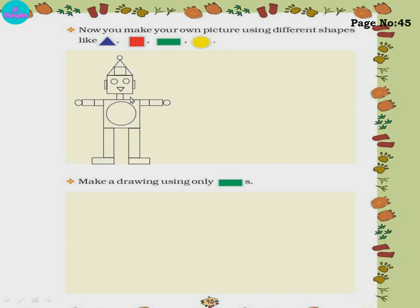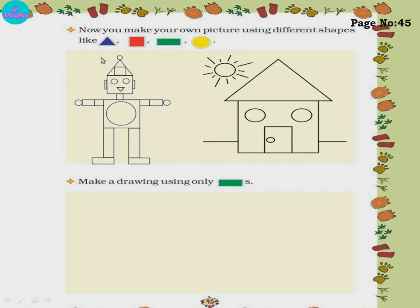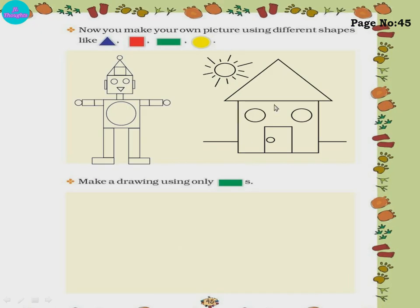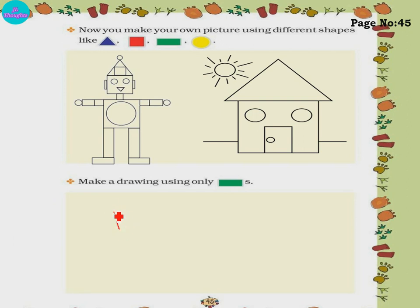Now you make your own picture using different shapes, Page number 45. Using triangle, square, rectangle, and circle you can make a joker, which you made in first class, or a house, or anything. Color triangles in blue, squares in red, rectangles in green, circles in yellow. Make drawings only using rectangles - you can make a house, apartment, or any building using only rectangles.